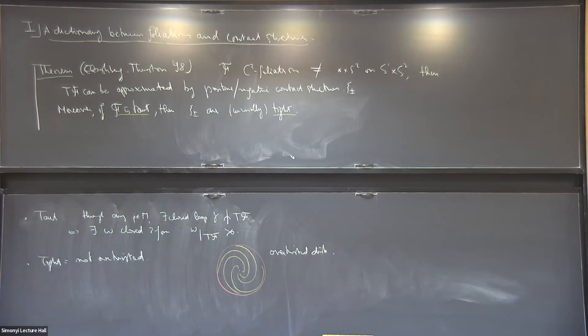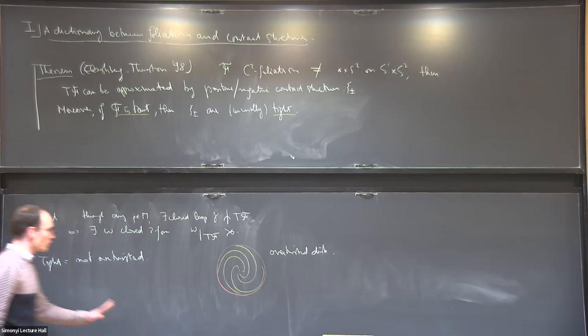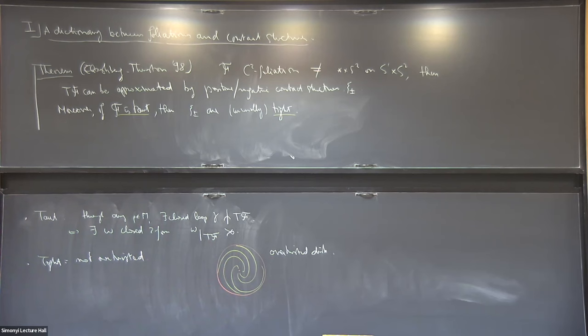Overtwisted contact structures are flexible: they obey an h-principle. Similarly, there is a maybe correct equivalent: overtwisted should correspond to a foliation with a Reeb component. On both sides of the picture there is some flexibility and rigidity, and I want to try to match the different degrees of rigidity on both sides.